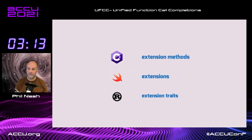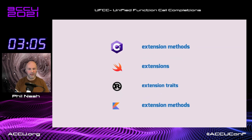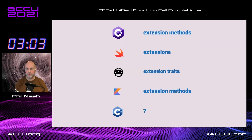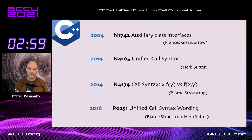Rust has extension traits, which are really just traits that do extensions, because everything's a trait in Rust. Kotlin has extension methods as well. Now, C++ that we've been talking about doesn't have an equivalent feature. That's not through lack of trying. It's just a collection of the more recent proposals in that space that I've been able to find since 2004.